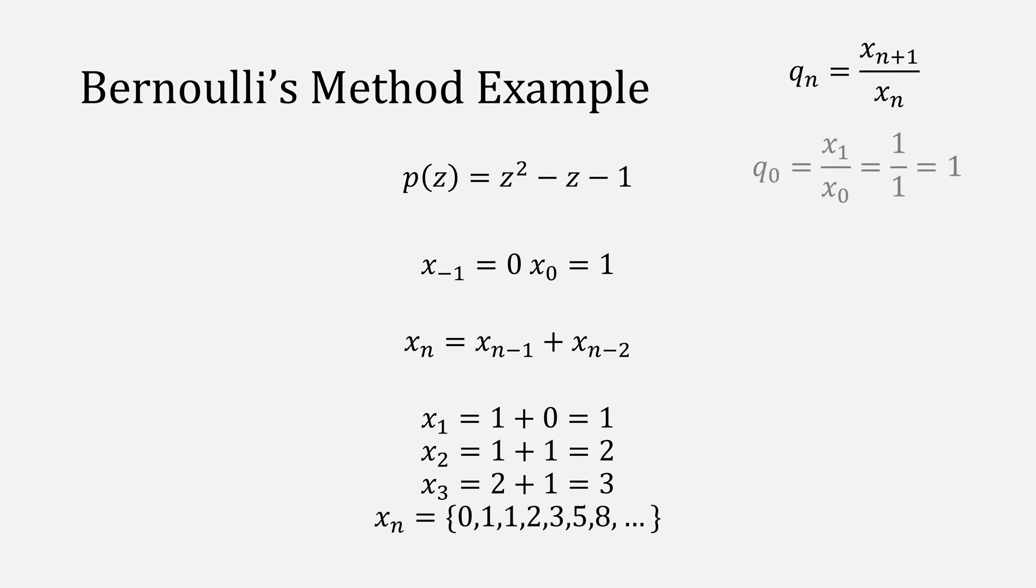Then we'd look at our ratios for our x terms, starting with 1 over 1 to give us 1, 2 over 1 to give us 2, 3 over 2 to give us 1.5, followed by 1.6 repeating, 1.6 exactly, 1.625, and eventually 1.618.